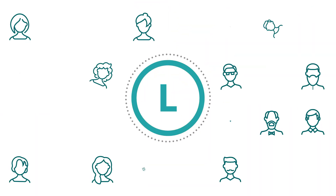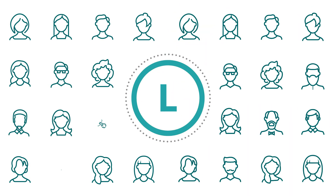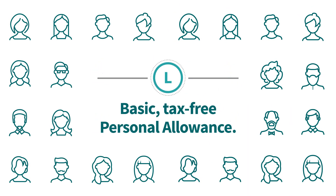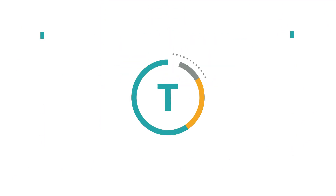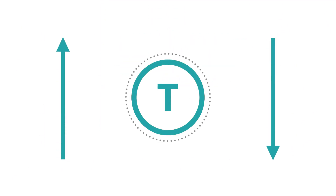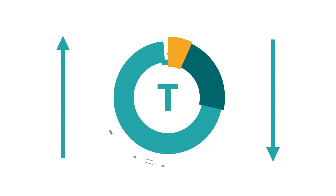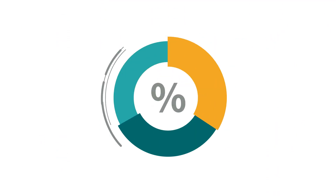L is the most common tax code. It means that you're receiving a tax-free personal allowance. T is a transitional code, which includes differing calculations to work out your personal allowance.